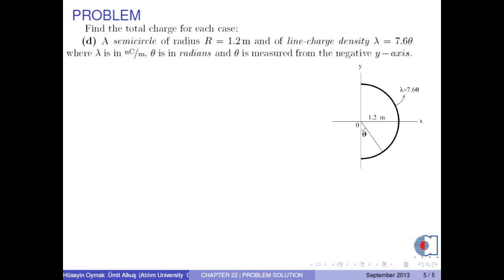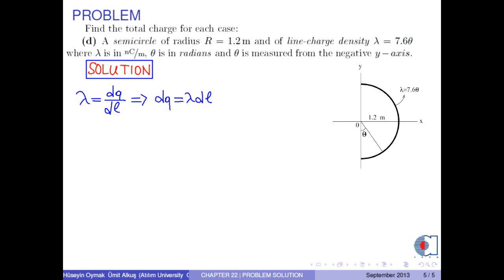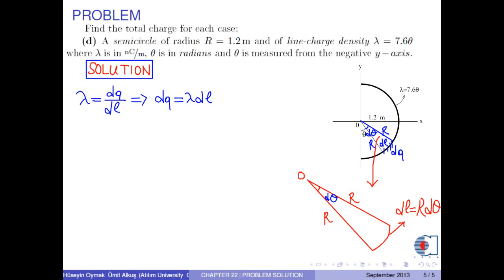D: Find the total charge of a semicircle of radius r equals 1.2 meters and of line charge density lambda equals 7.6 theta, where lambda is in nanocoulombs per meter, theta is in radians, and theta is measured from the negative y-axis. The line charge density lambda is calculated by the formula dq over dl, from which we obtain dq as lambda times dl, where dl is shown in the figure and is calculated to be r times dθ. Therefore, dq becomes lambda times r times dθ.